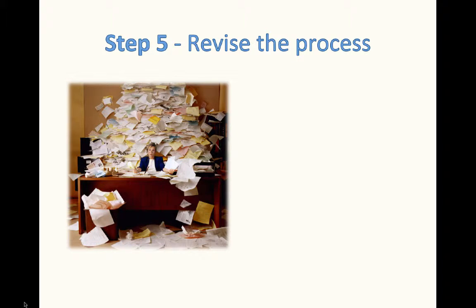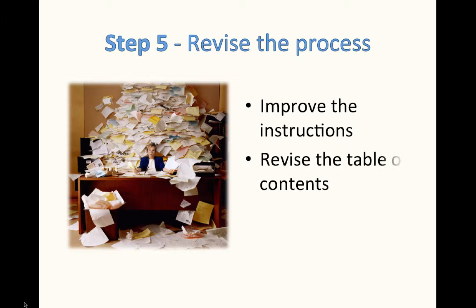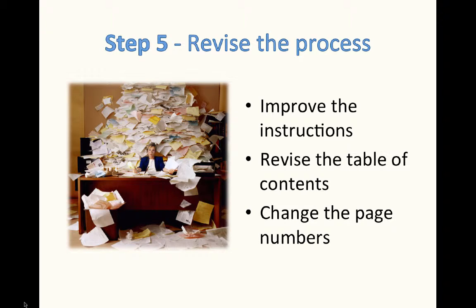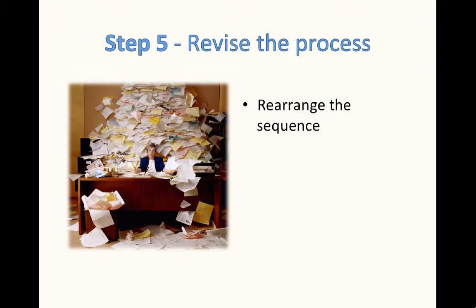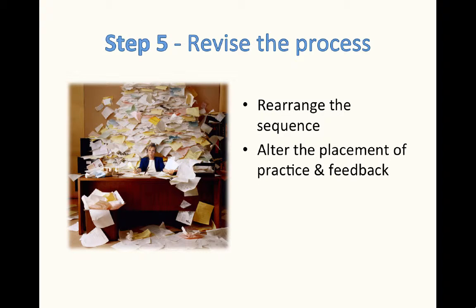Step 5 is to revise the process. The first thing you might want to do is improve the instructions if they aren't working well. Also, you might want to revise the table of contents so that it's easier to find. Work with the page numbers to make sure that people can find what they're looking for. You may want to rearrange the sequence of your instruction based on what you learned in your analysis. You can also alter the placement of practice and feedback — this would be if you have a chunk that's too large or one that's too small. You can also add coding to make it easier for people to find things, using symbols or color coding for activities, feedback, test items, and other pieces of instruction.